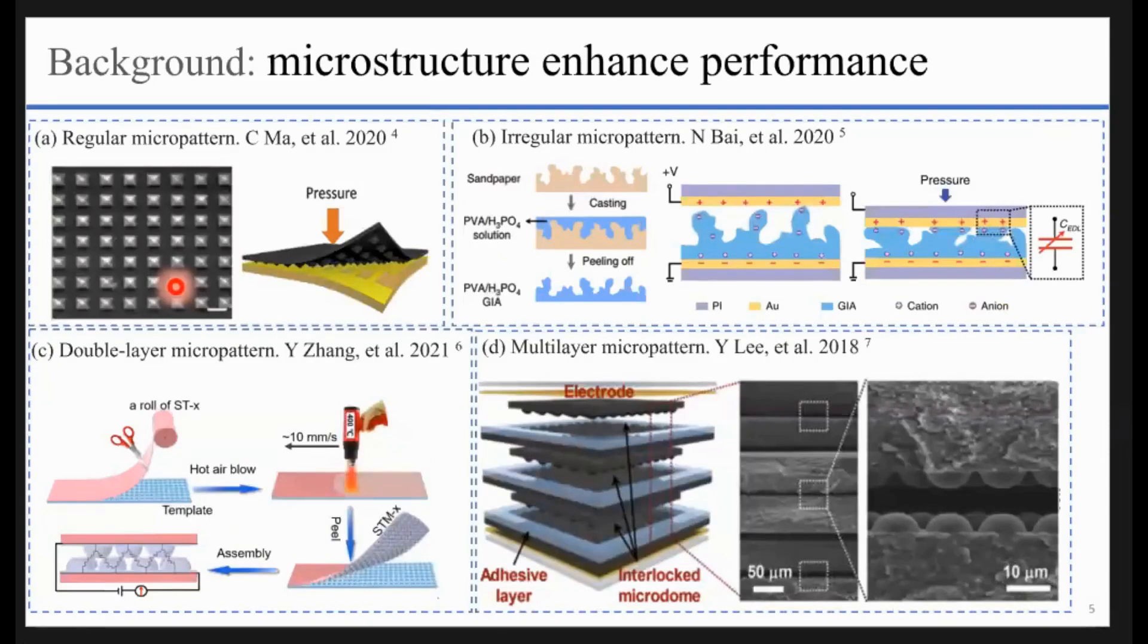To further enhance the performance of the sensor, some people begin to make microstructures on the surface. If it's a flat surface, the pressure will be distributed evenly, and the pressure on each point is uniform and small because it's distributed.